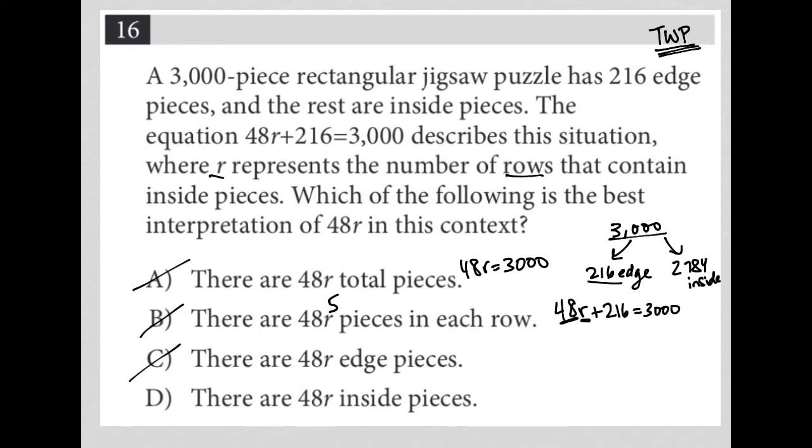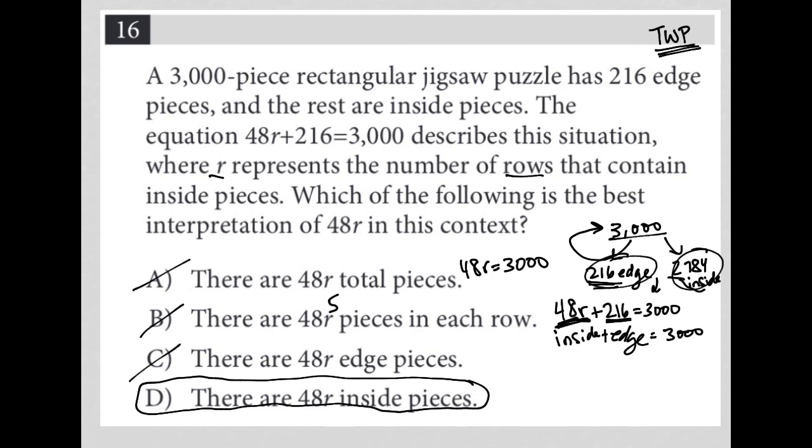Choice D, there are 48R inside pieces. I like that because we know that 216 plus 2,784, add those two things together and we get the total number of pieces for the entire puzzle. We can translate that down into the equation that's provided. We know the 216 is edge, which means the 48R must be inside, because we're saying that that plus that equals the 3,000. So choice D, there are 48R inside pieces makes the most sense. Therefore choice D is the correct answer.